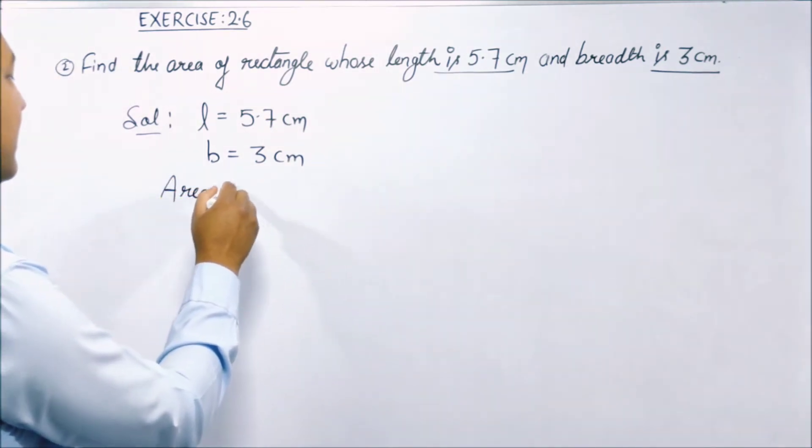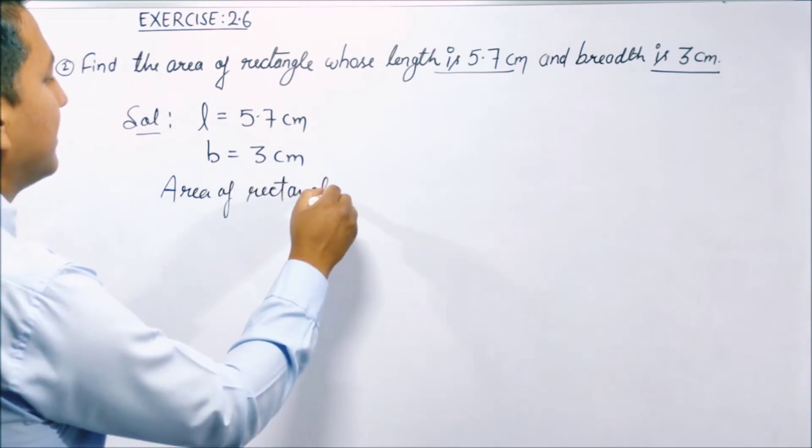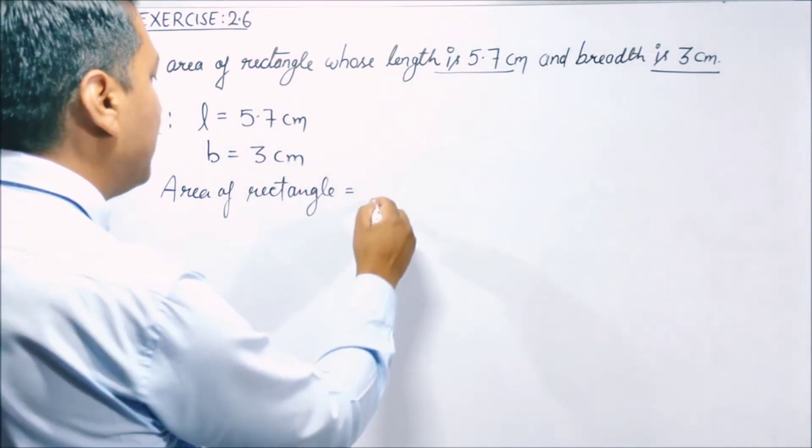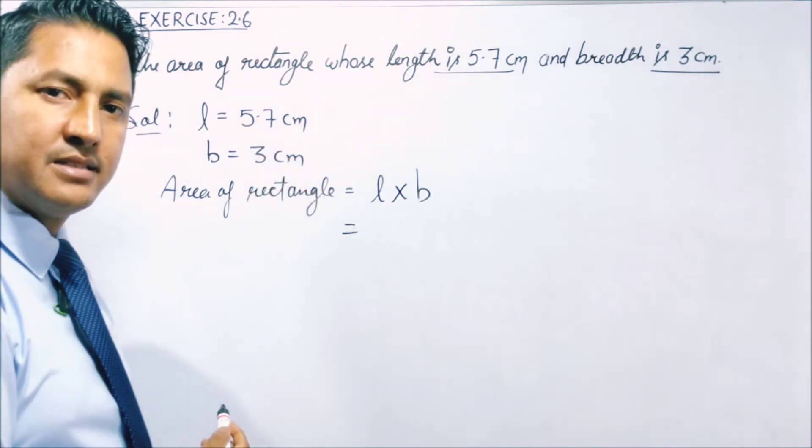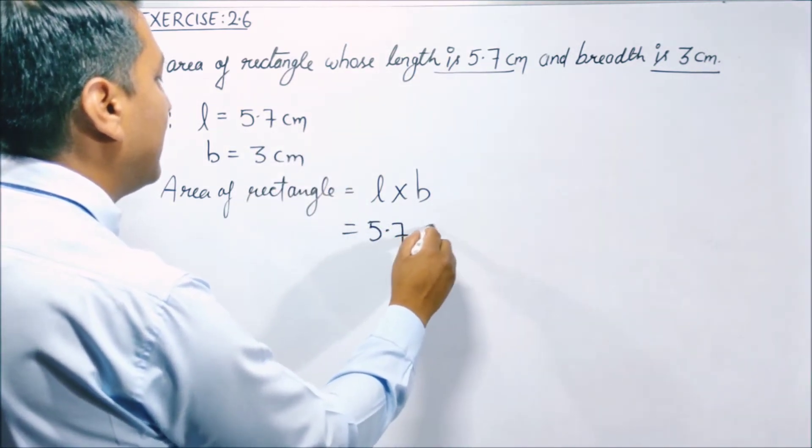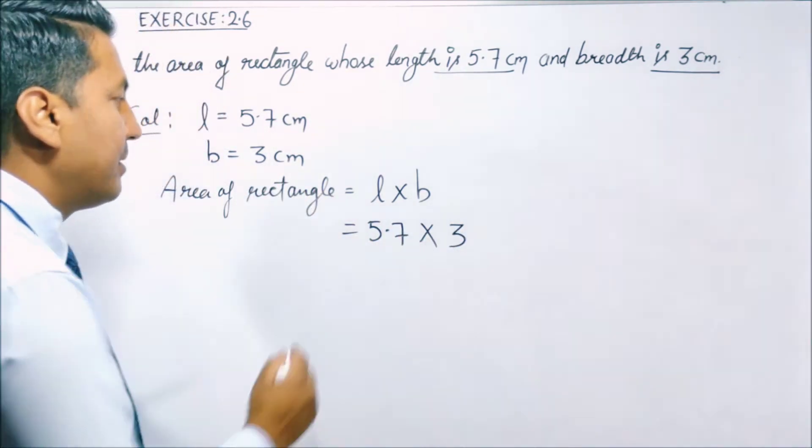तो area of rectangle का formula L into B, length into breadth. तो length कितनी है आपके पास? 5.7 centimeter. 5.7 लिख लिए. और breadth कितना है? 3 है. 3 लिख लिए. अब देखो कोई problem नहीं है.